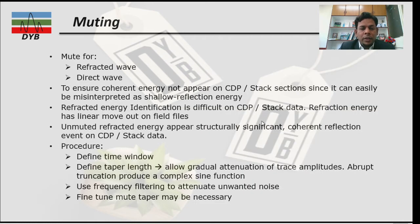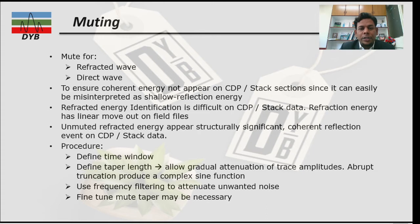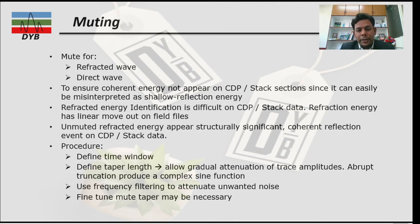Muting is applied to reflected and direct waves to ensure coherent energy does not appear on the CDP or stack section, since it can easily be misinterpreted as a shallow reflection event. Another consideration is that reflected energy identification is difficult on the CDP or stack section — sometimes reflection energy has a linear moveout on the field file. Unmuted reflected energy can appear as a structurally significant coherent reflection event in the stack data, so you have to understand what type of traces are recorded in your data set.